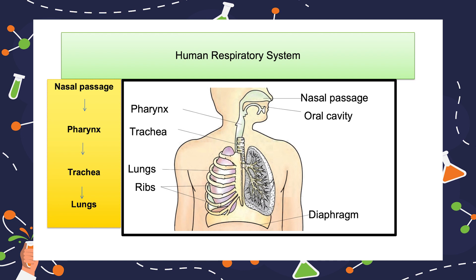So let us learn about the human respiratory system. Normally we take in air through our nostrils. When we inhale, air passes through our nostrils into the nasal cavity. From the nasal cavity, the air reaches our lungs through the windpipe. The lungs are present in the chest cavity, as shown in the picture on the screen.